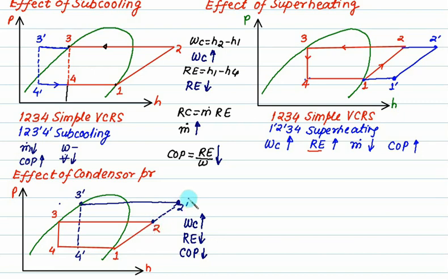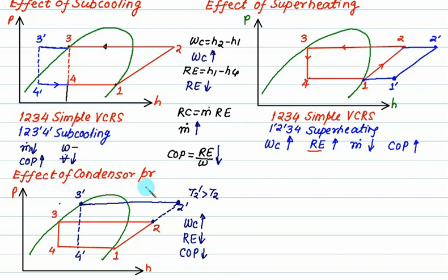From this analysis, if condenser pressure decreases, compressor work decreases, RE increases, and COP increases. This means the condenser pressure should be kept as low as possible — we should avoid high condenser pressure.